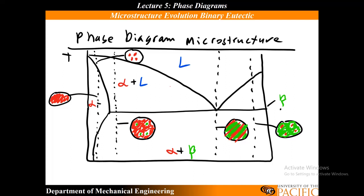We can draw different microstructures from this diagram. If I'm at this composition at a given temperature, there's a little bit of A plus some liquid. If I'm over here, I'm closer to the alpha side than to the beta side. You can see the eutectic microstructure — going from liquid to all alpha plus beta — and adjacent compositions give alpha plus beta as well.